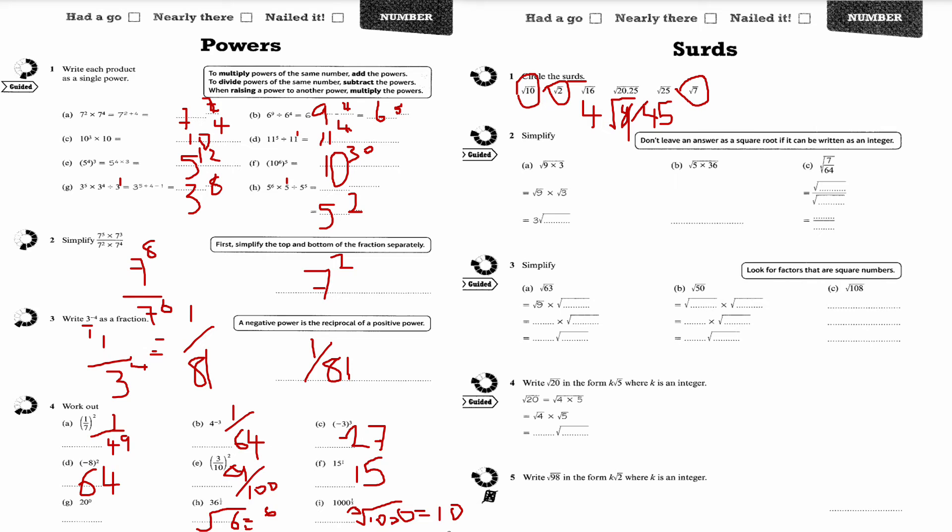It's question number 2. Simplify root 9 times root 3. Root 9 is 3 times root 3 is root 3. I'm going to have root 5 times the square root of 36. This 36 we should know is a square number, so that answer is going to be 6. 6 times root 5 is just 6 root 5.